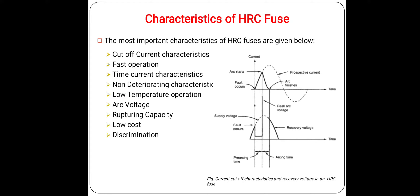The next characteristic is fast operation: the HRC fuse interrupts the short circuit current long before it attains its maximum value, which is not possible in the case of a circuit breaker. The HRC fuse operates as fast as possible compared to a circuit breaker, interrupting the short circuit current within the first quarter of a cycle. The next characteristic is time-current characteristics: the HRC fuse follows inverse time-current characteristics, where operating time decreases as fault current increases.